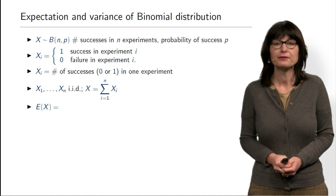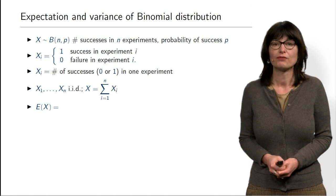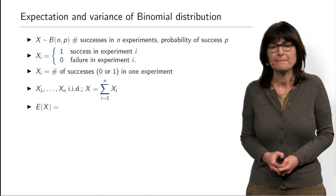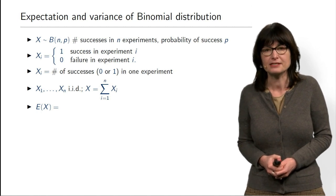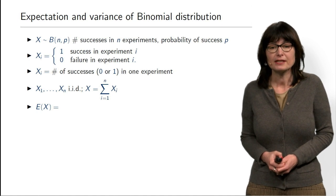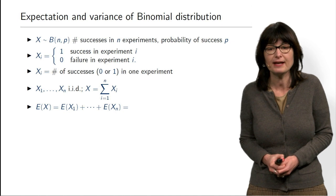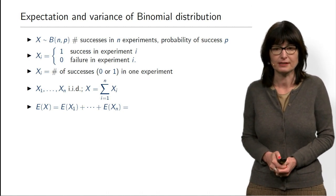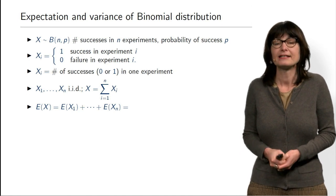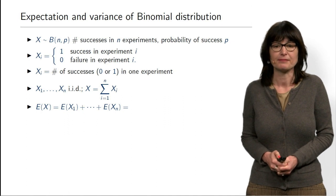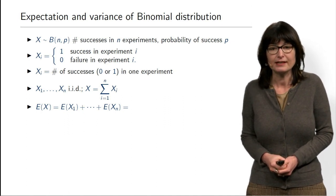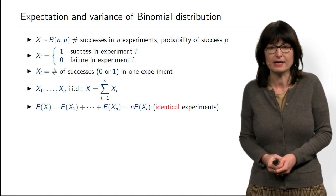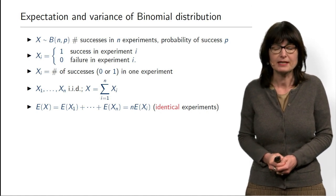Now, what about expectation? We discussed that expectation is a linear function, so the expectation of X is nothing else but the expectation of the sum on the right-hand side. The expectation of a sum is the sum of expectations. So the expectation of X equals the sum of all average values of X1, X2, etc. Since all these Xi are independent and identically distributed, the expectation is the same for each. So we can write it as N times the expectation of Xi for any i.